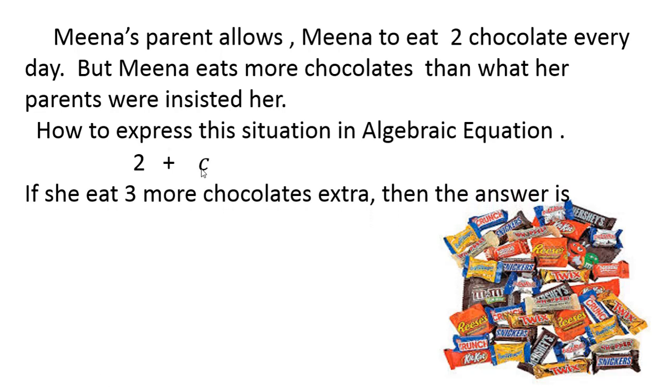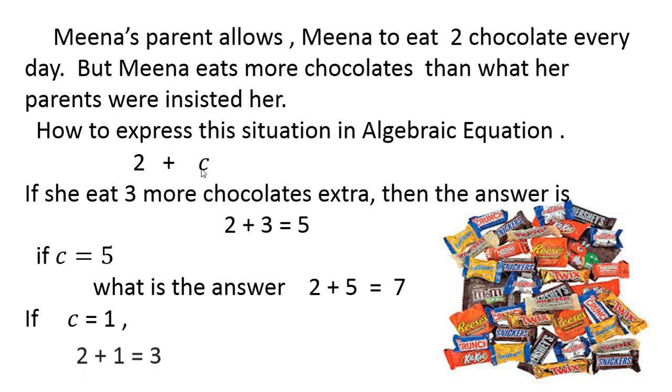Suppose if she eats three more chocolates extra, the c value is three, so 2 + 3 = 5. If she eats five chocolates extra, that means c value equals five. You have to substitute the c value in the equation: 2 + c, where c value is 5, so 2 + 5 = 7. If c value is one, the answer is three.